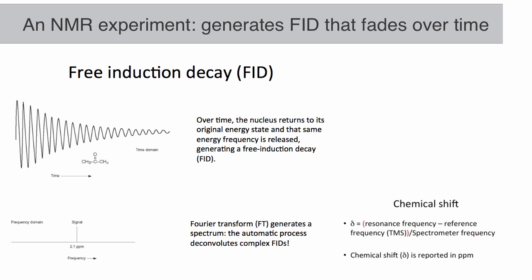The result is divided by the approximate resonance frequency of protons in that spectrometer. The result is a value called chemical shift, and the unit is parts per million, or ppm.